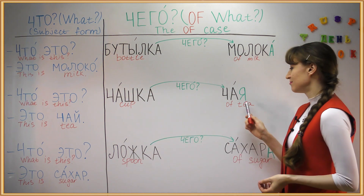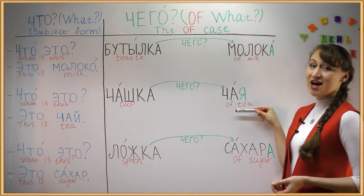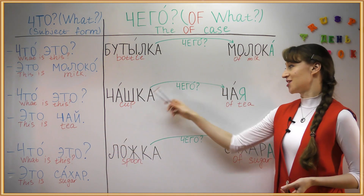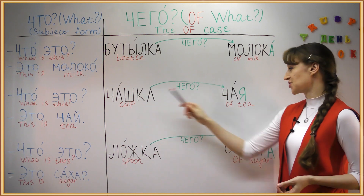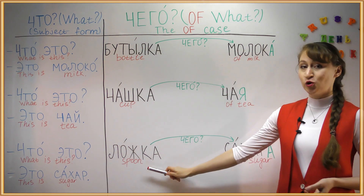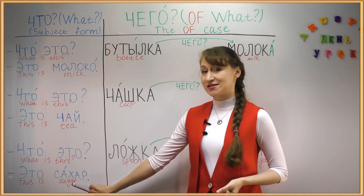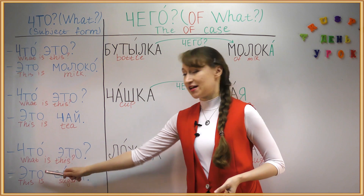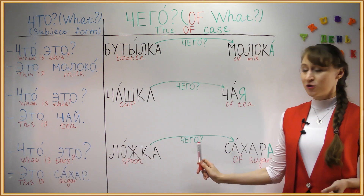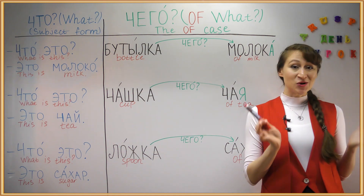ЧАШКА ЧАЯ — a cup of tea. ЧАЙ becomes ЧАЯ. ЧАШКА ЧЕГО? ЧАШКА ЧАЯ. ЛОЖКА САХАРА — a spoonful of sugar. САХАР: ЧТО ЭТО? ЭТО САХАР. ЛОЖКА ЧЕГО? ЛОЖКА САХАРА. This is the OF form.